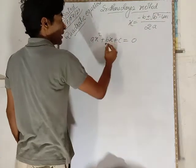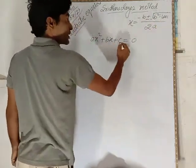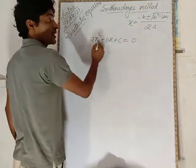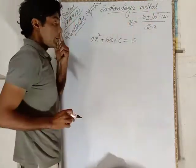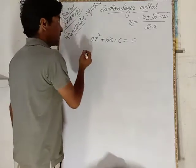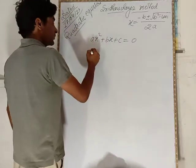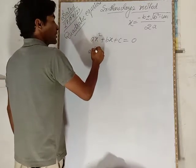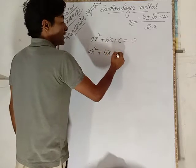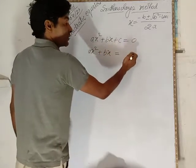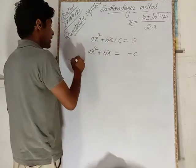Here is the form. Now how to derive it? ax² plus bx is equal to... if we move c to the other side, it becomes ax² plus bx equals minus c.